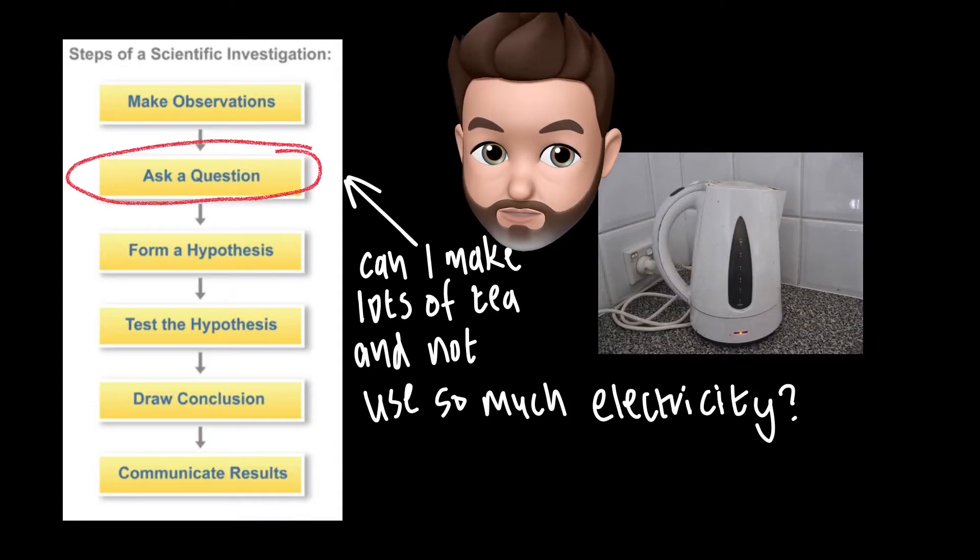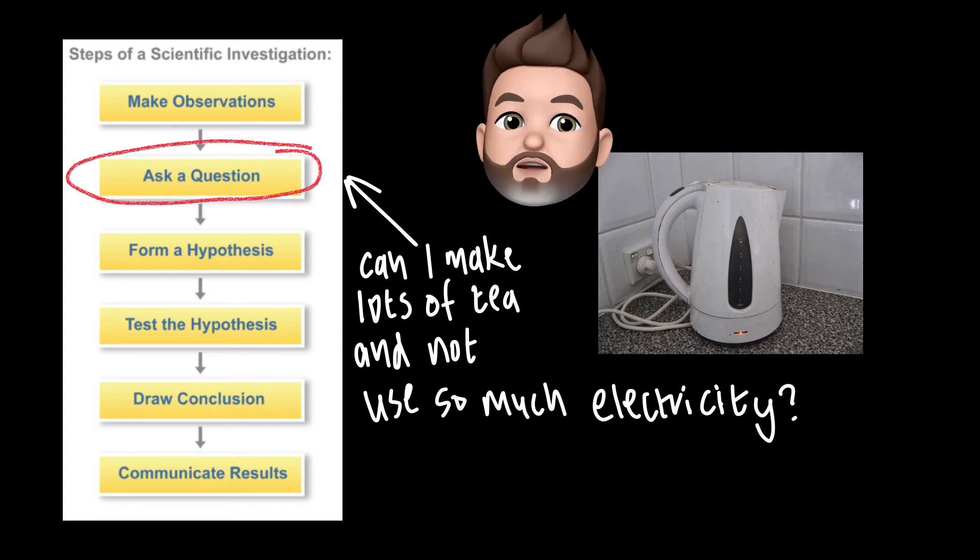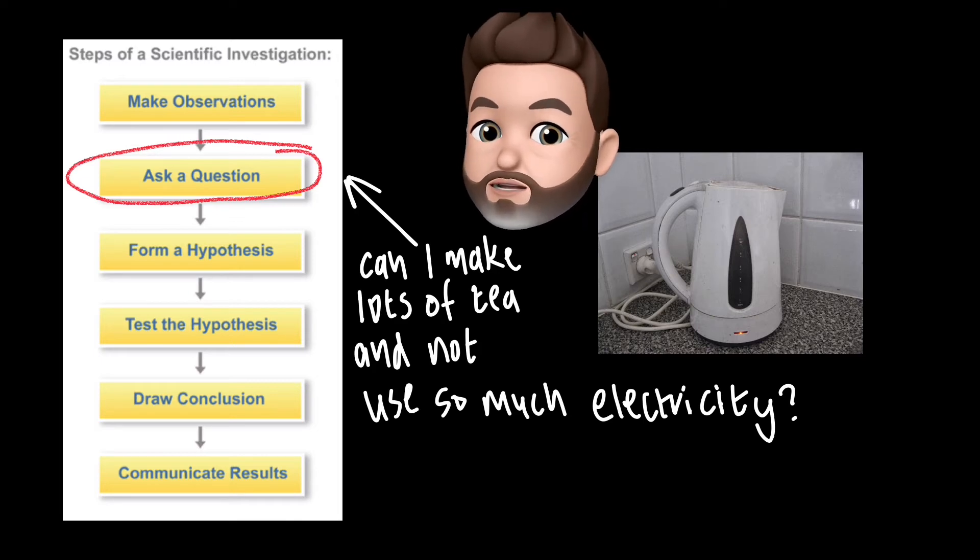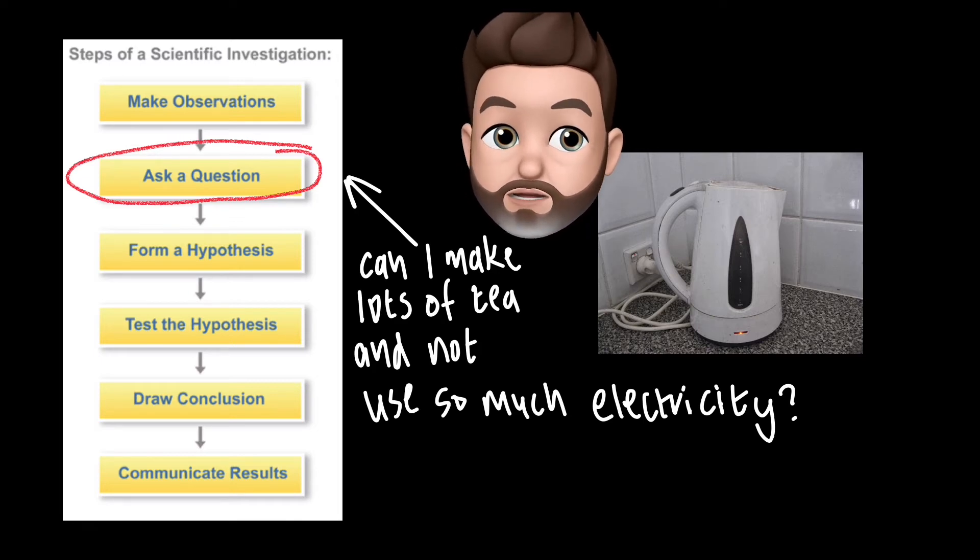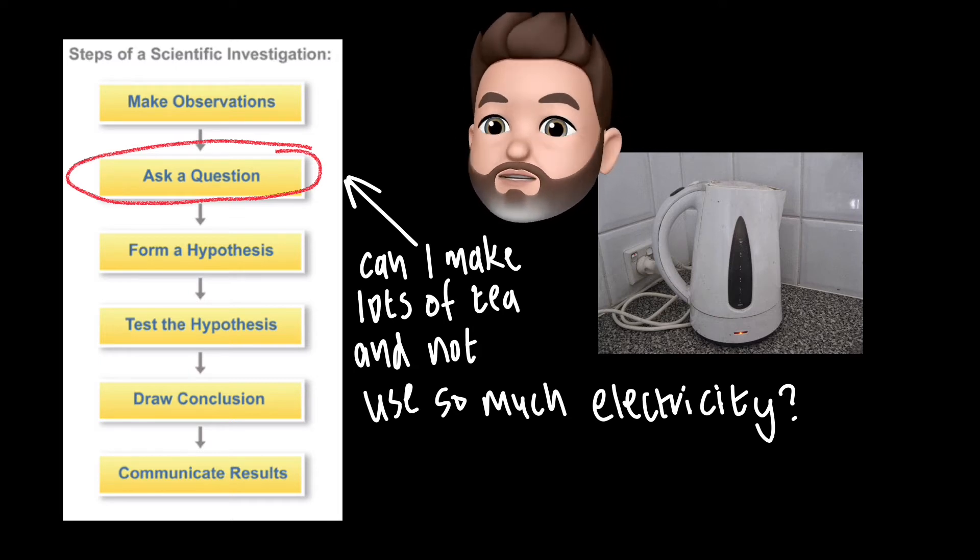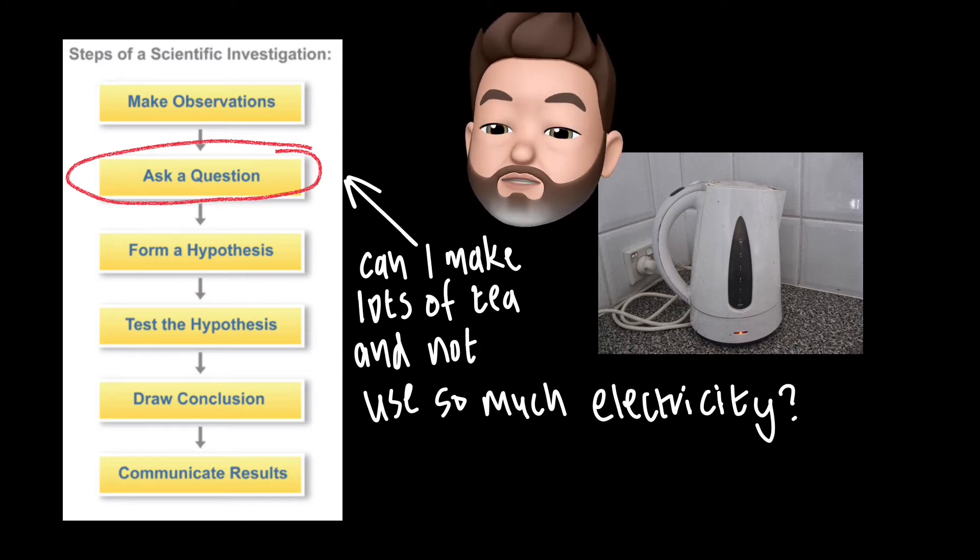So after you've observed you might start to ask a few questions about what you're observing. I might ask how often I boil a kettle, does this use lots of electricity, how much does this cost me? And from here I might ask, well what kind of impact does this have on the environment? And I might even ask whether there's a way that I can have lots of tea, because I like tea, and at the same time lessen my impact on the environment.